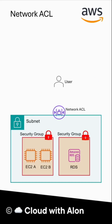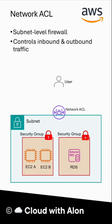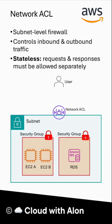Next, we have network access control list. It is a firewall that works at the subnet level. It is like a lock on your whole subnet. It checks inbound and outbound rules but does not remember the connection. That is why it is called stateless, meaning when a request is allowed in, the response must be explicitly allowed.